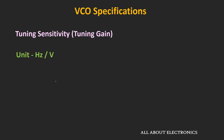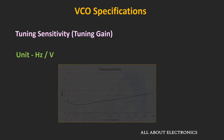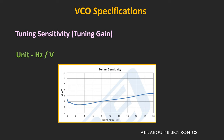For one VCO, if the tuning gain K is equal to 2 MHz per volt, then when the voltage changes by 1V, the frequency of the oscillator will change by 2 MHz. This tuning sensitivity may not be constant over the entire tuning range — as shown in the figure, it may vary with the control voltage. In the datasheet, manufacturers specify the typical range of the tuning gain rather than a specific value. For example, the tuning gain may vary from 2 MHz per volt to 4 MHz per volt.